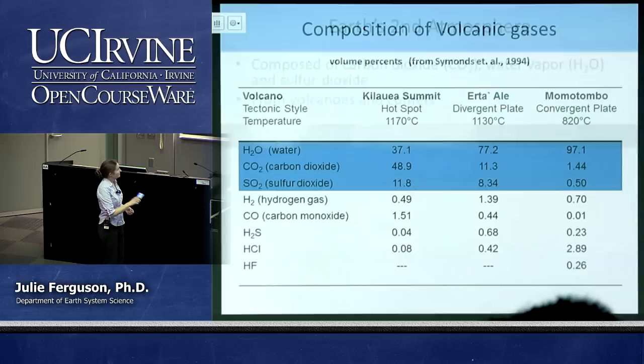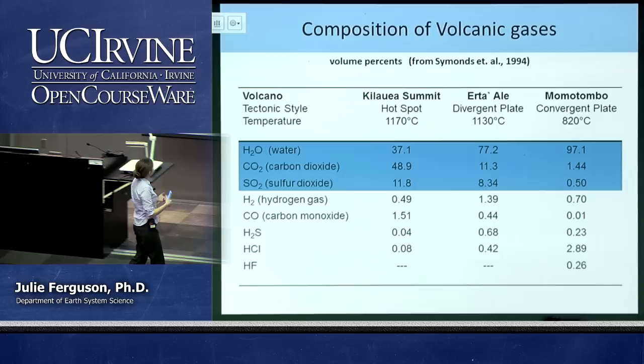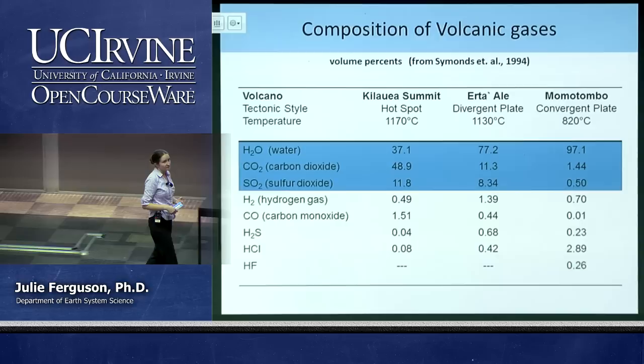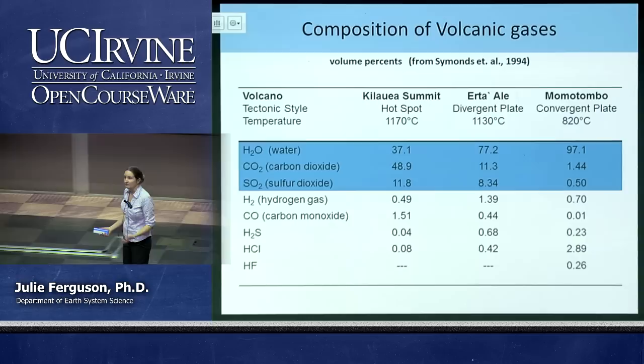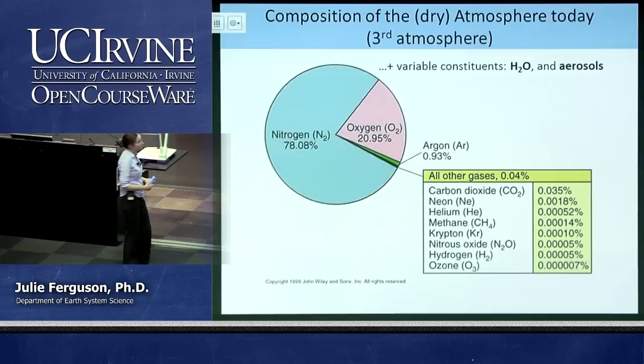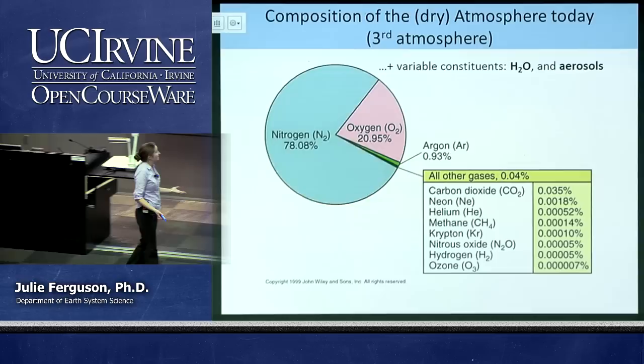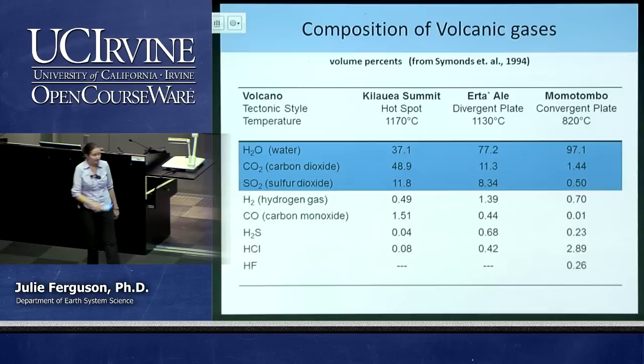But we have a problem. The gases released by volcanoes today are mostly water vapor, carbon dioxide, sulfur dioxide, and hydrogen sulfide — pretty nasty gases. That is not what makes up our atmosphere today. Our atmosphere today is mainly nitrogen, oxygen, and argon, with tiny amounts of other gases. So the question is: how did we go from an atmosphere of mainly water vapor and carbon dioxide to our current nitrogen, oxygen, and argon atmosphere?